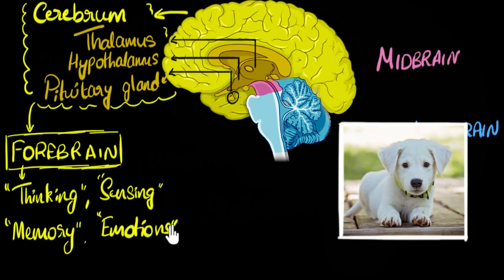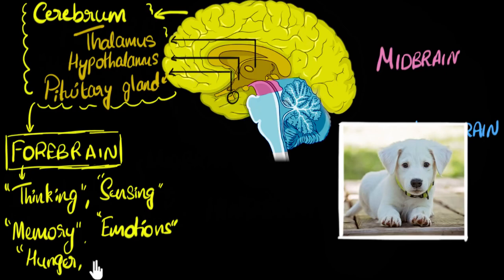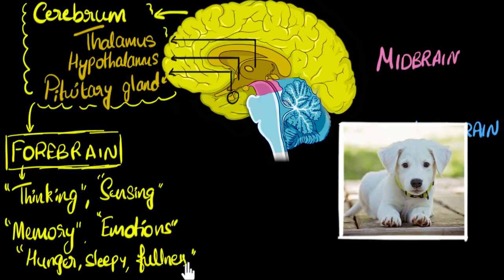Besides these, there are also other things the forebrain does. Some feelings you get — like the feeling of hunger, the feeling of being sleepy, thirst, or after finishing a meal, the feeling of fullness — all of that also comes from your forebrain. Actually, that comes from the hypothalamus specifically, but we don't have to remember all those individual details. So these are some of the main functions of your forebrain.